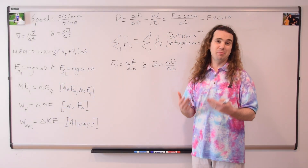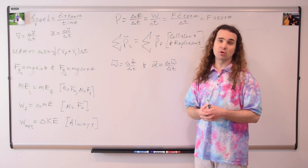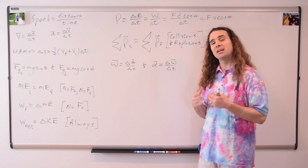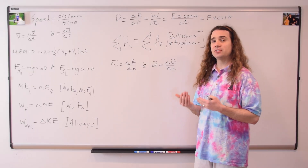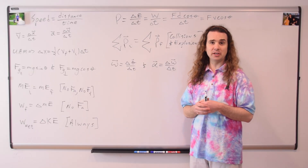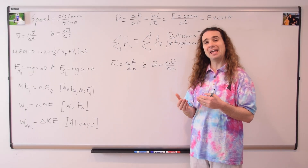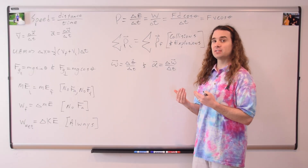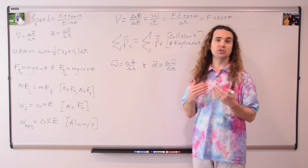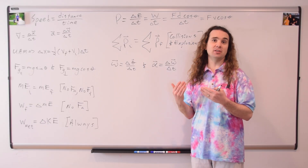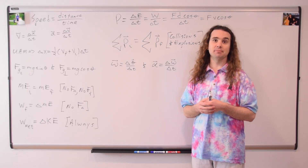Two basic circular motion equations: angular velocity equals change in angular position over change in time, and angular acceleration equals change in angular velocity over change in time.